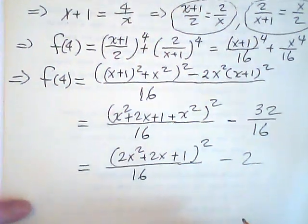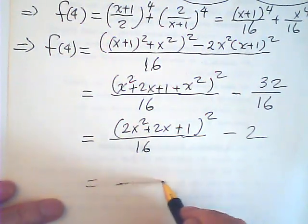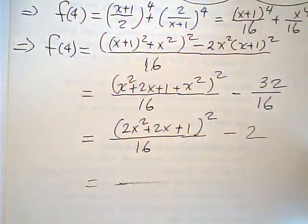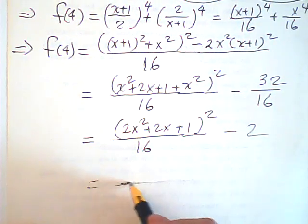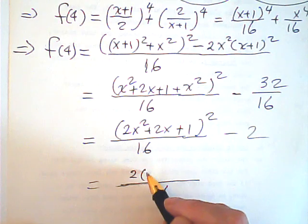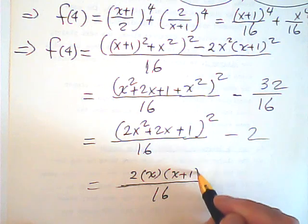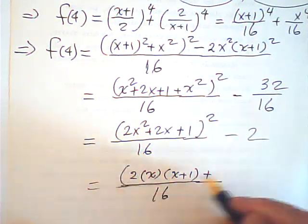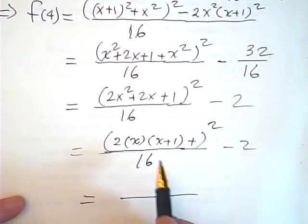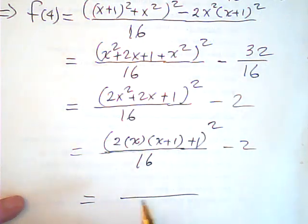And 2x square plus 2x plus 1 squared, this will minus 2. This is 4. 2x squared plus 2x plus 1, 2x square plus 2 is 4.